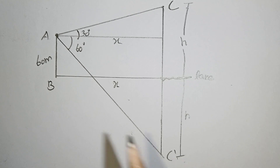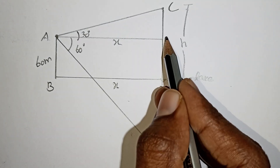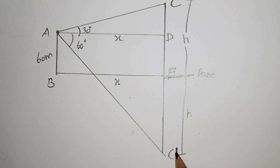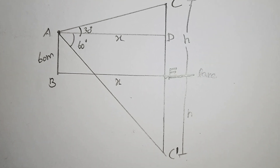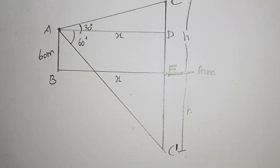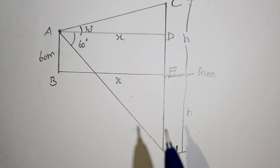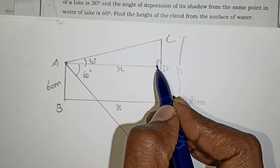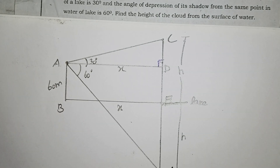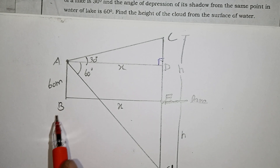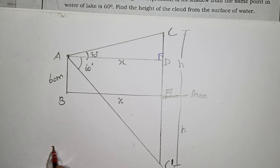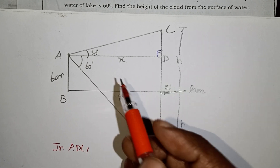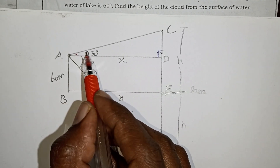We label the points A, B, C, D, E. The right angle triangle is triangle ADC. The angle of elevation in triangle ADC is 30 degrees.